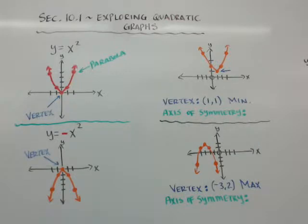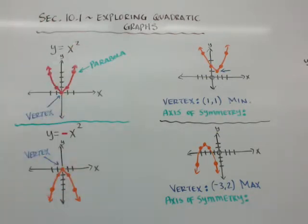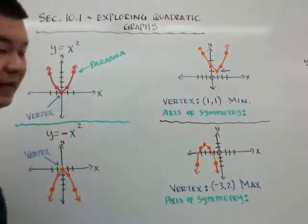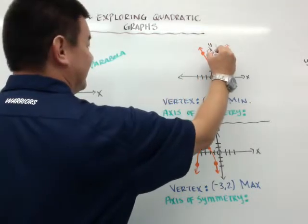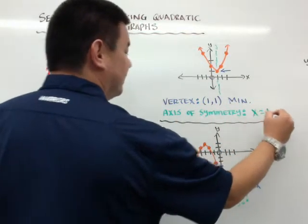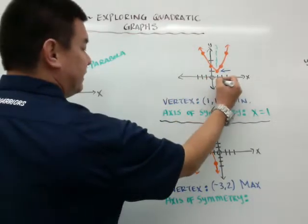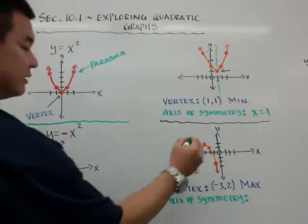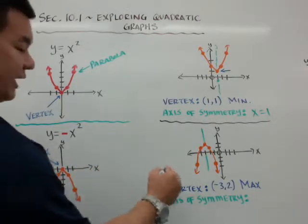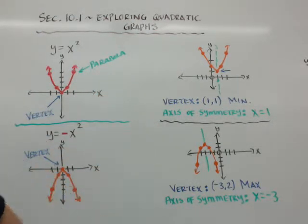The other thing they'll ask you for is axis of symmetry. The axis of symmetry is if you took this parabola and folded it in half — where is that middle? Or it's the x-coordinate of the vertex. So in this case, the axis of symmetry would go right down the line. It would be x equals 1. When we get into linear graphing, you'll see how the equation of a vertical line is x equals 1. In this one, looking at the axis of symmetry, x is equal to negative 3. For these parabolas that go up and down, your axis of symmetry will always be x.